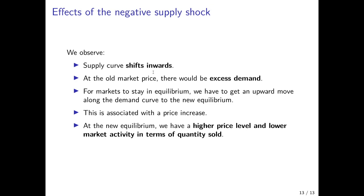To summarize: there is a reduction in oil supply due to OPEC cartel policies, which shifts the supply curve inwards. At the old market price, we would have excess demand — households demand more oil via petrol and heating. This excess demand leads to upward pressure on the price of oil. We move along the old demand curve to the new equilibrium, which is associated with a higher price level and lower market activity in terms of quantity sold. That is what we observed during the oil price crisis in the 1970s.